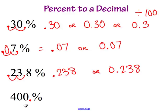For our final problem: 400%. Note that 400% is more than 100%, so our answer is actually not going to be a decimal — we're greater than 1 here. If we move the decimal over two places, it sits right in front of that 4, so our answer is simply 4.